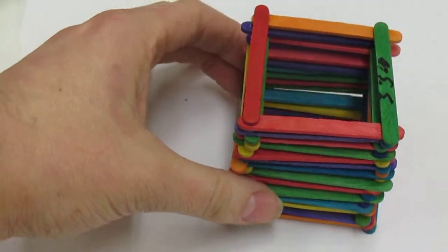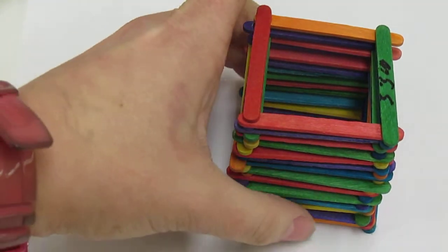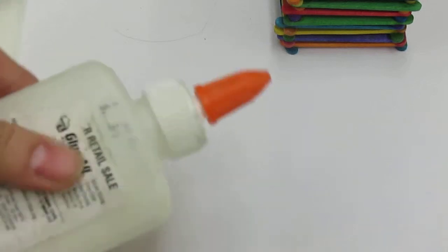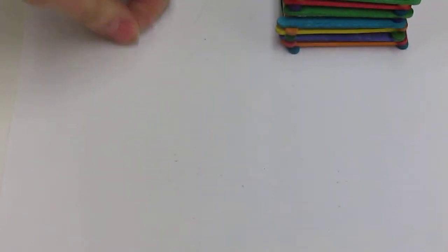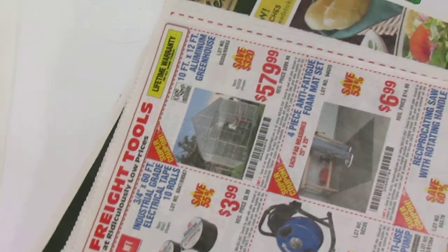So the first thing you want to do is get your glue, make sure it works. If it doesn't work, raise your hand and I'll come help you out. Then at your table you're going to see a tray full of your colored popsicle sticks. I'm also going to have us work on little pieces of newspaper so that we don't get the table all yucky. I'm going to use my white paper here so you can see what I'm doing.